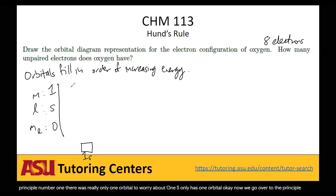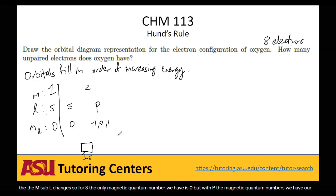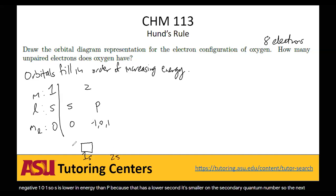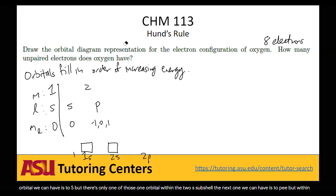Now we go to the principal number of two. Two has two types of subshells: s and p, corresponding to secondary quantum numbers zero and one. For s, the only magnetic quantum number is zero. But with p, the magnetic quantum numbers are negative one, zero, and one — giving three orbitals. So s is lower in energy than p because it has a smaller secondary quantum number. The next orbital is 2s, with one orbital, and then 2p with three orbitals within that subshell.